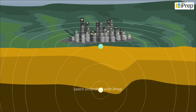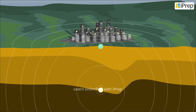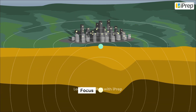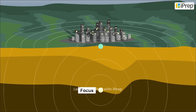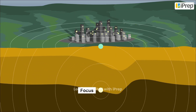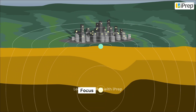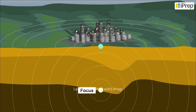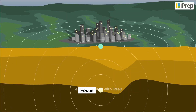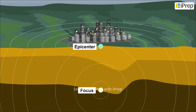Earthquakes occur when the lithospheric plates vibrate and cause the Earth around the focus to vibrate. The focus is the point in the crust where the vibration starts due to seismic energy. The place on the surface above the focus where vibrations or seismic waves are felt is the epicenter.